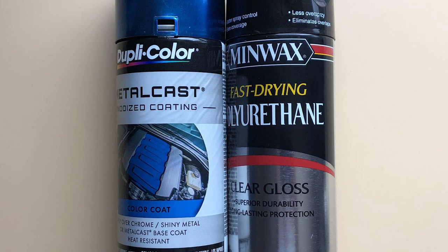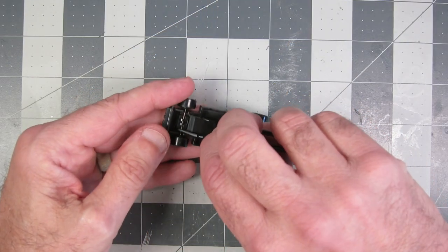I decided to hit the polished casting with blue metal cast paint, which I'm sure comes as no surprise to anyone, and then went over that with the Minwax Clear Gloss Poly.